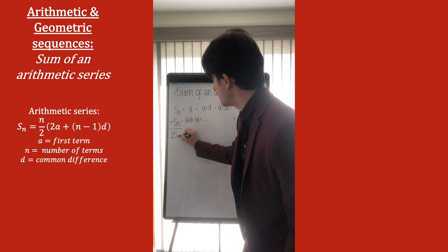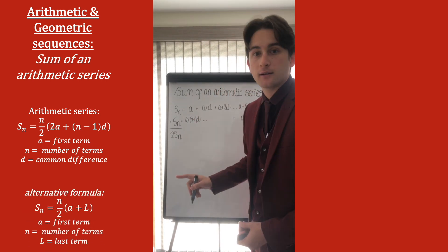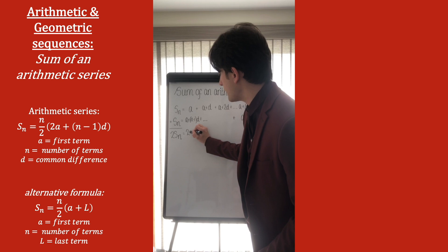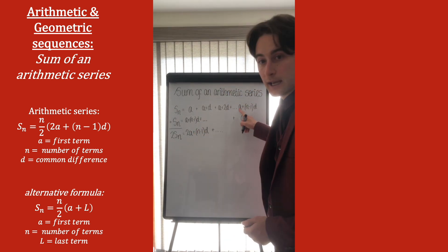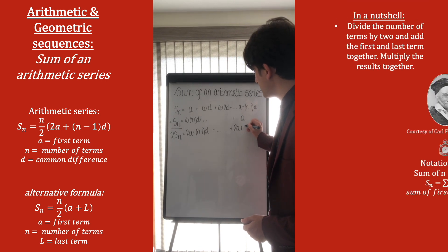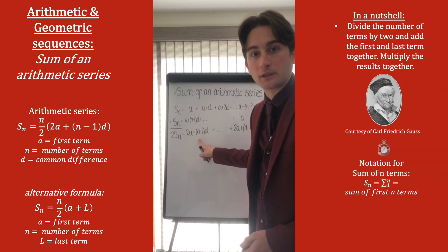So we end up with two times the sum that we actually want. A plus A plus (N minus 1)D becomes 2A plus (N minus 1)D. And this will carry on. We'll have the same thing all the way down to the last term, A plus A plus (N minus 1)D. So we have 2A plus (N minus 1)D appearing N times.